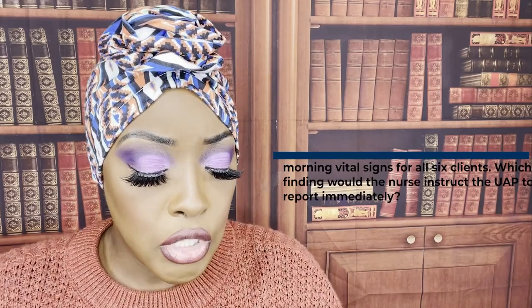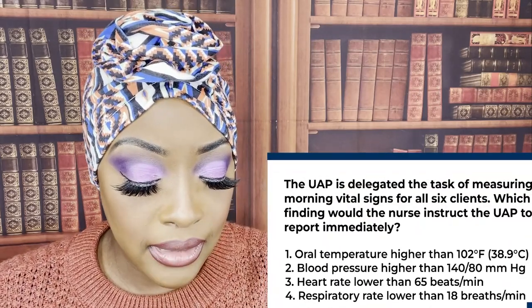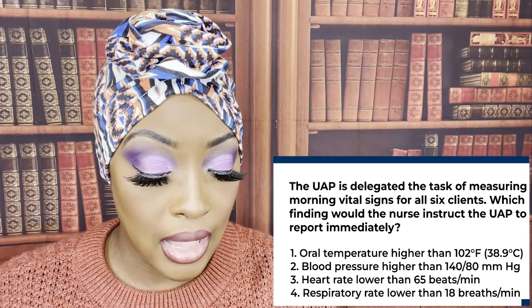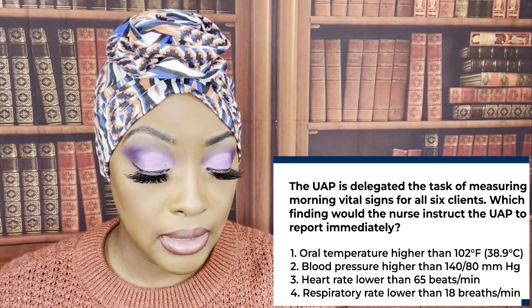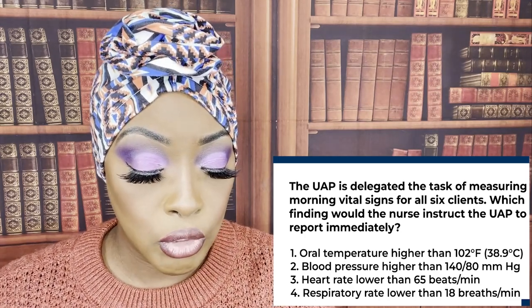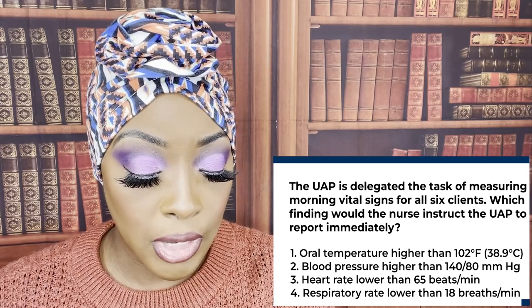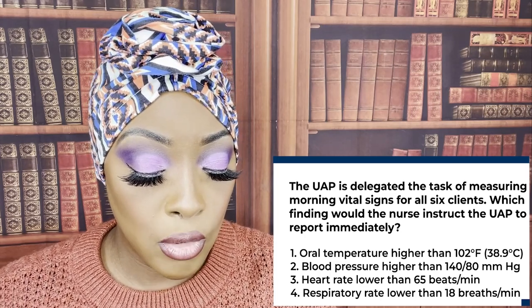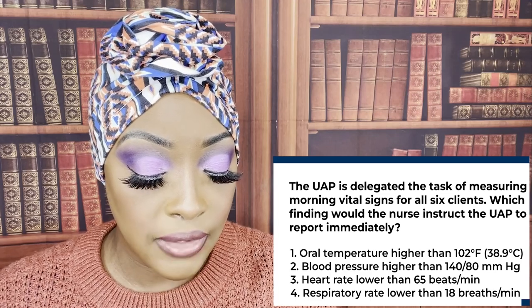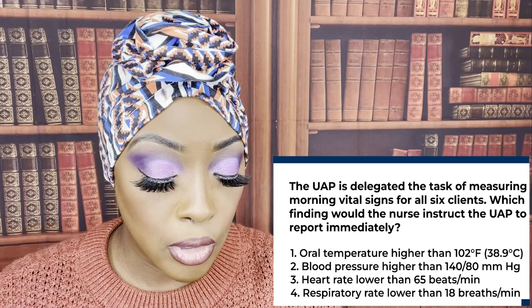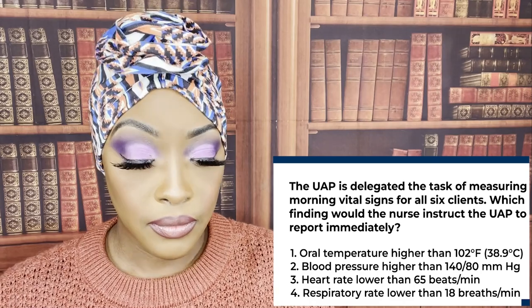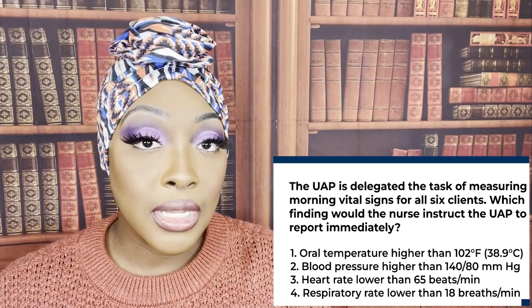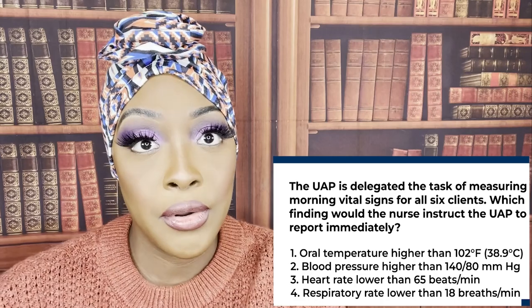Here is our first question. The UAP is delegated the task of measuring morning vital signs for all six clients. Which finding would the nurse instruct the UAP to report immediately? One, oral temperature higher than 102. Two, blood pressure higher than 140 over 80. Three, heart rate lower than 65 beats per minute. Or four, respiratory rate lower than 18 breaths per minute. The correct answer is number one — the temperature higher than 102.